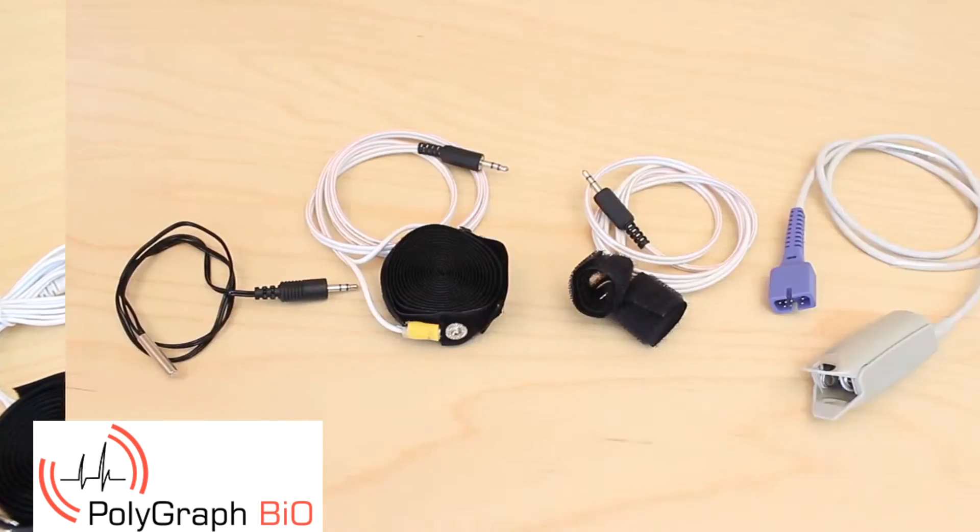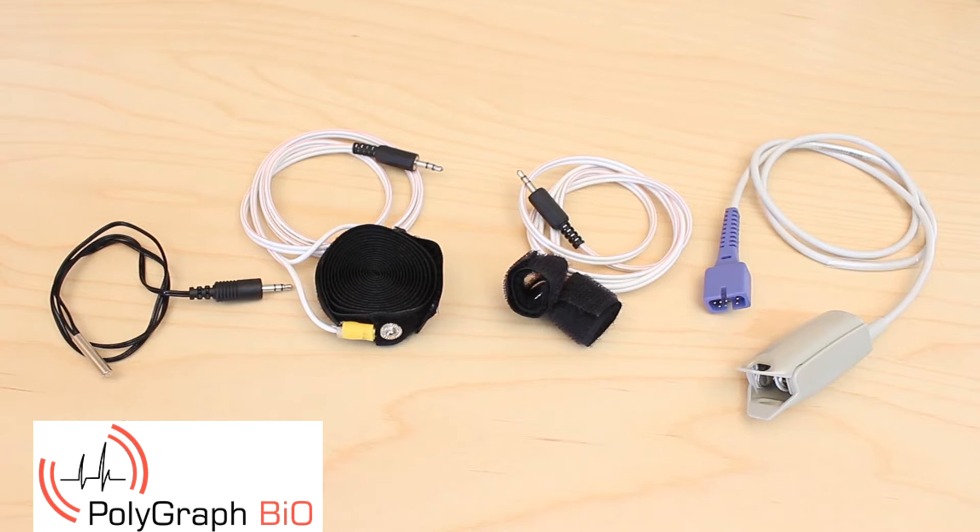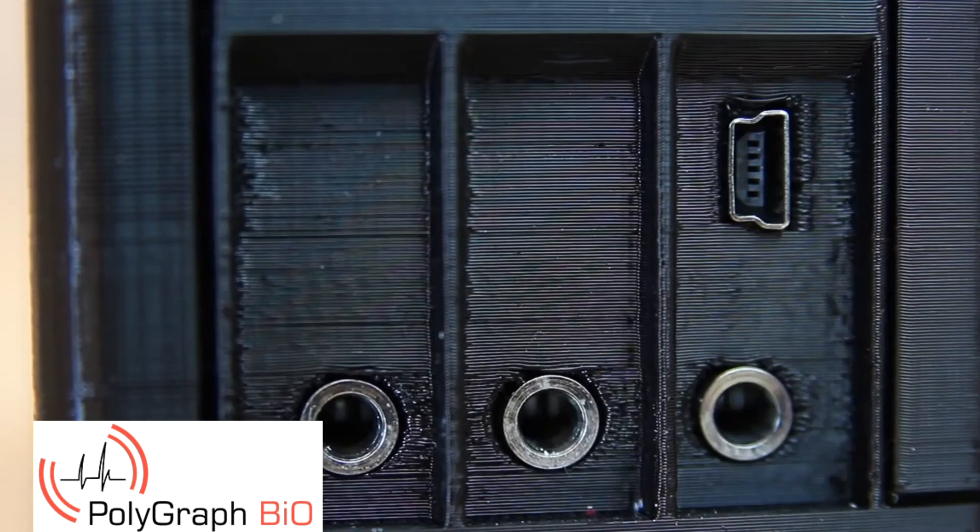Included in the polygraph's box, you'll find four measurement probes that can also be found in medical applications, together with a connection box that the probes will be connected to.